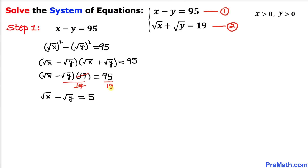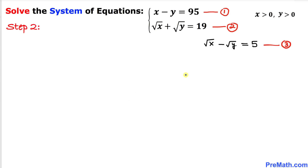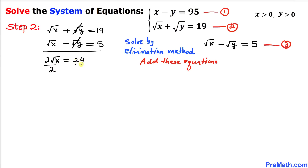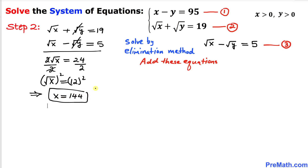Let's call this equation number three. Now focusing on equations two and three, we'll solve this system using the elimination method. Adding these two equations, the positive square root of y and negative square root of y cancel out, leaving: 2 times square root of x equals 24. Dividing both sides by 2 gives square root of x equals 12, and squaring both sides gives x equals 144.